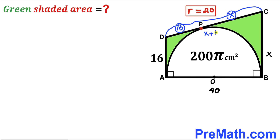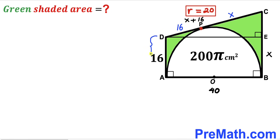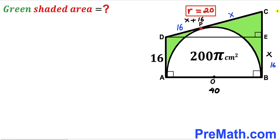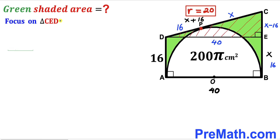Therefore, the whole length CD is x + 16 cm. Dropping a perpendicular DE onto side BC, we observe that side AD equals side EB, so EB = 16 cm. Since the whole side BC = x, segment CE = x − 16 cm. Side DE equals the diameter AB, so DE = 40 cm.